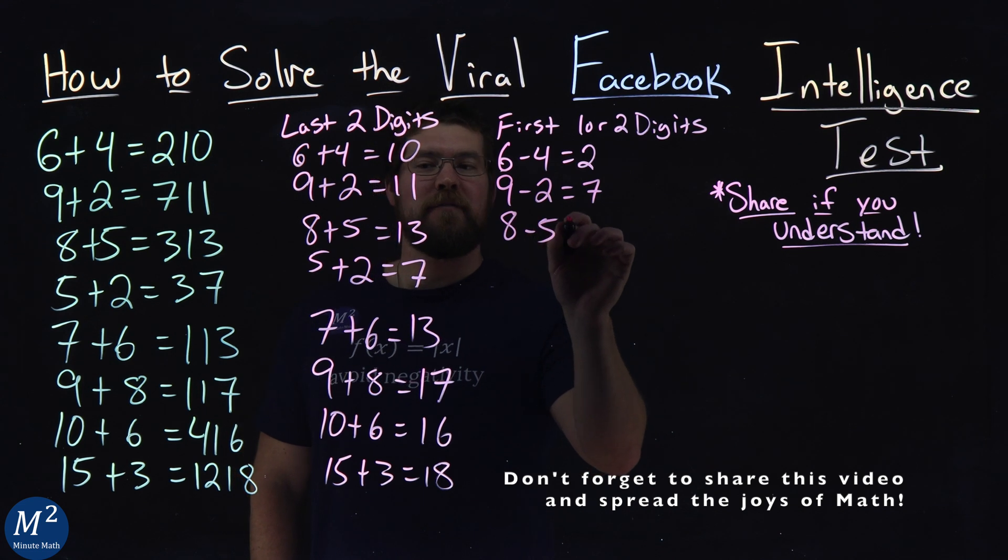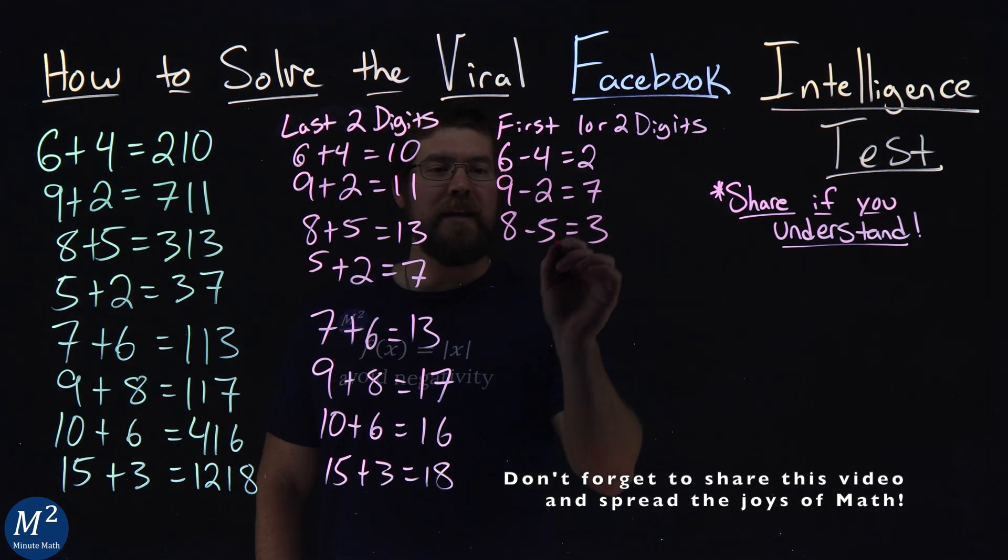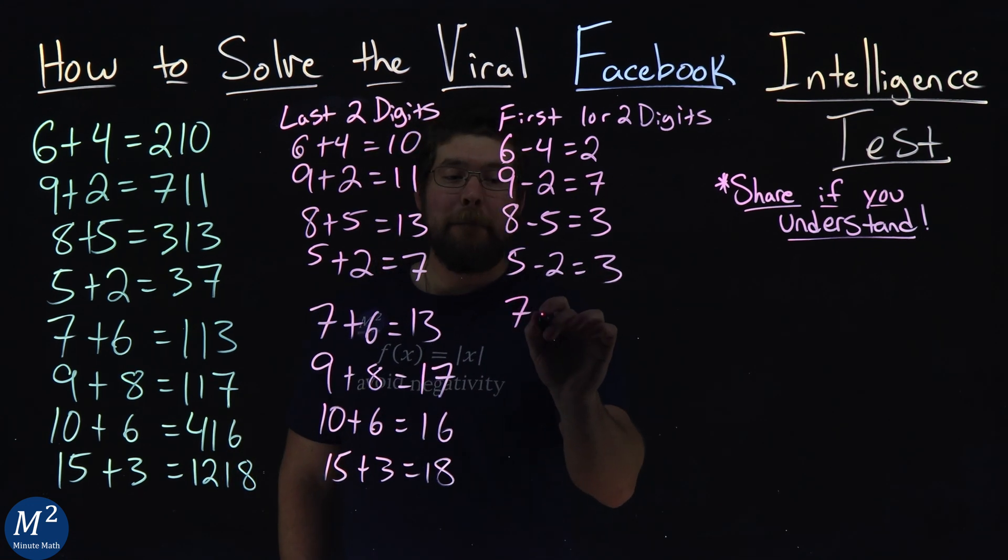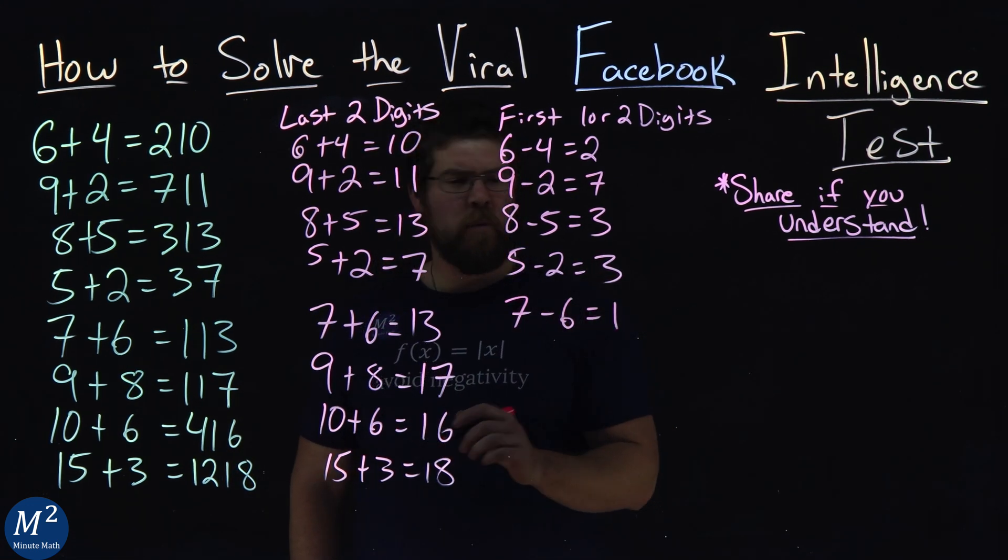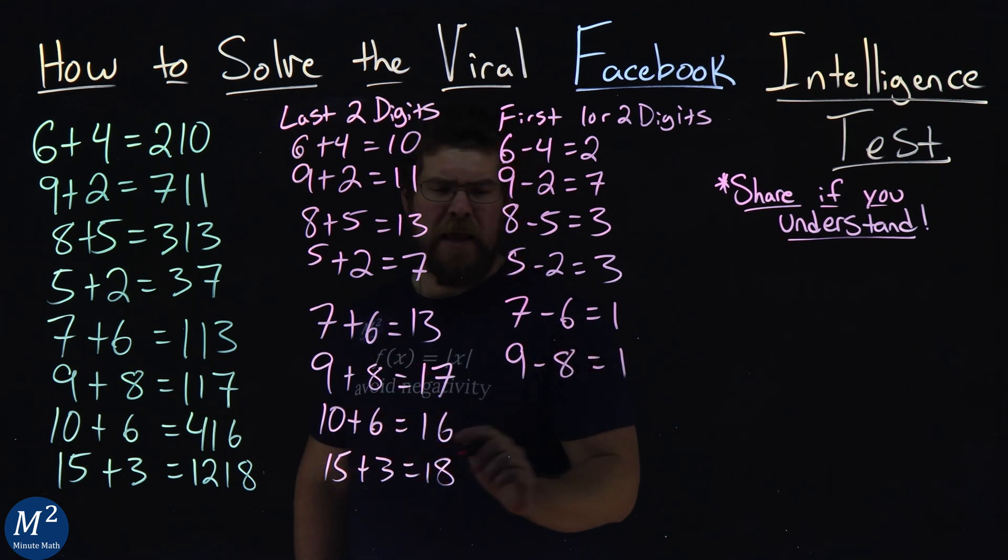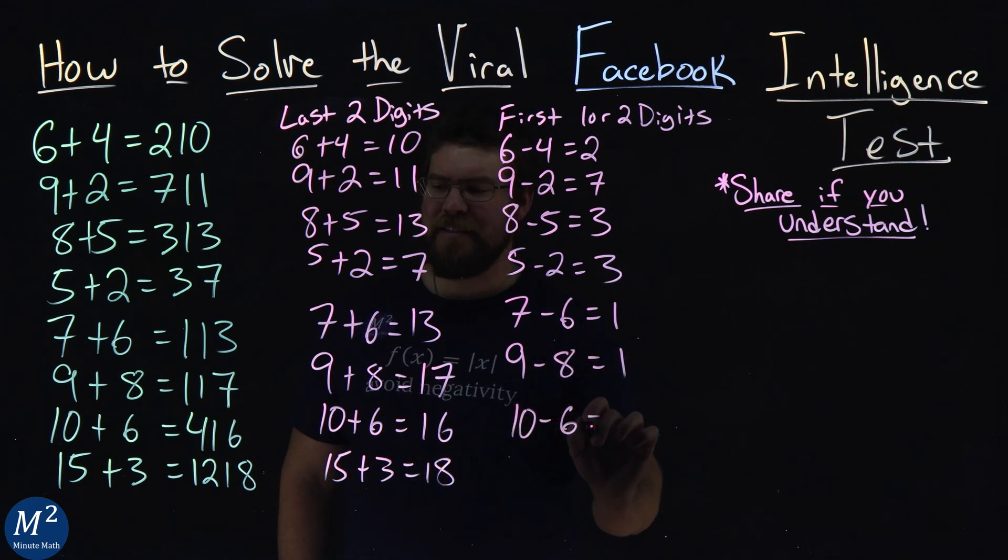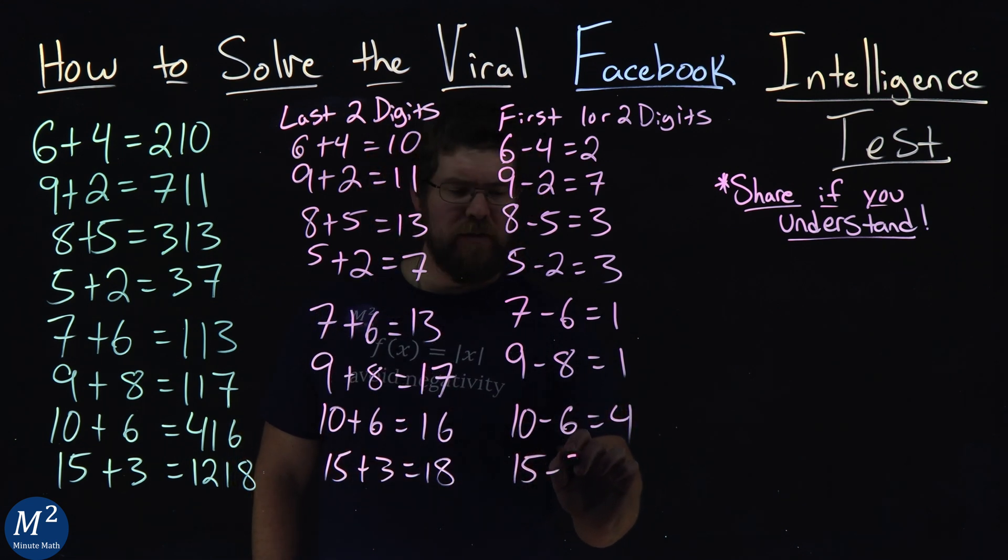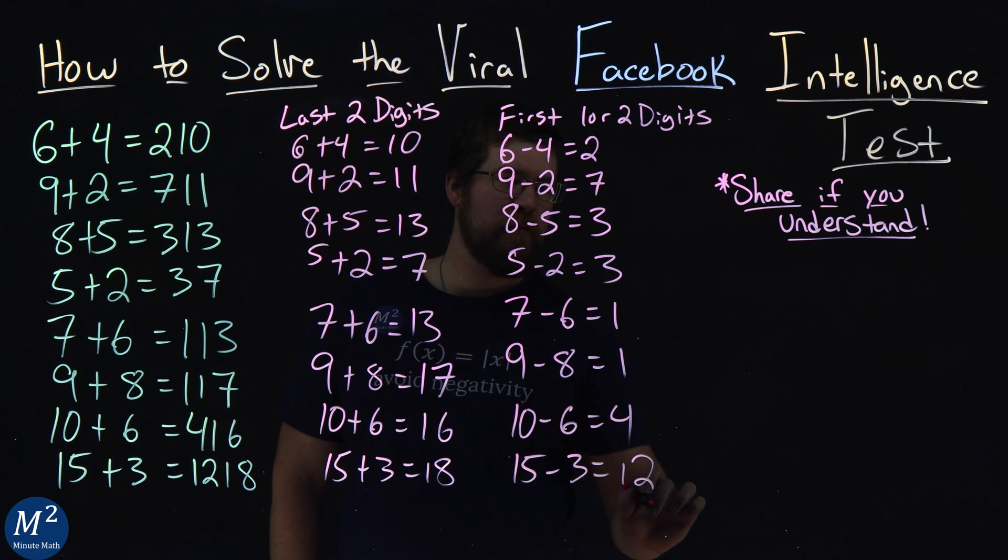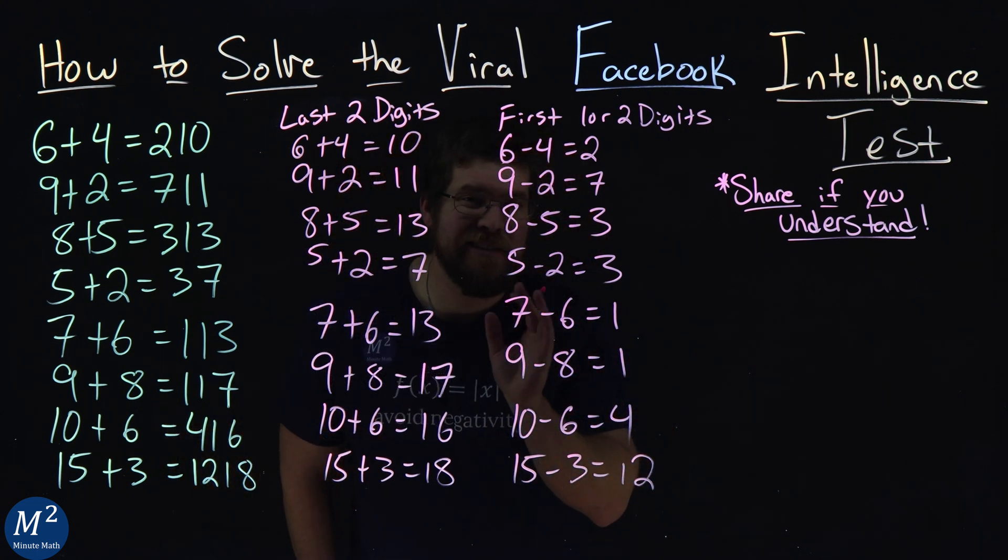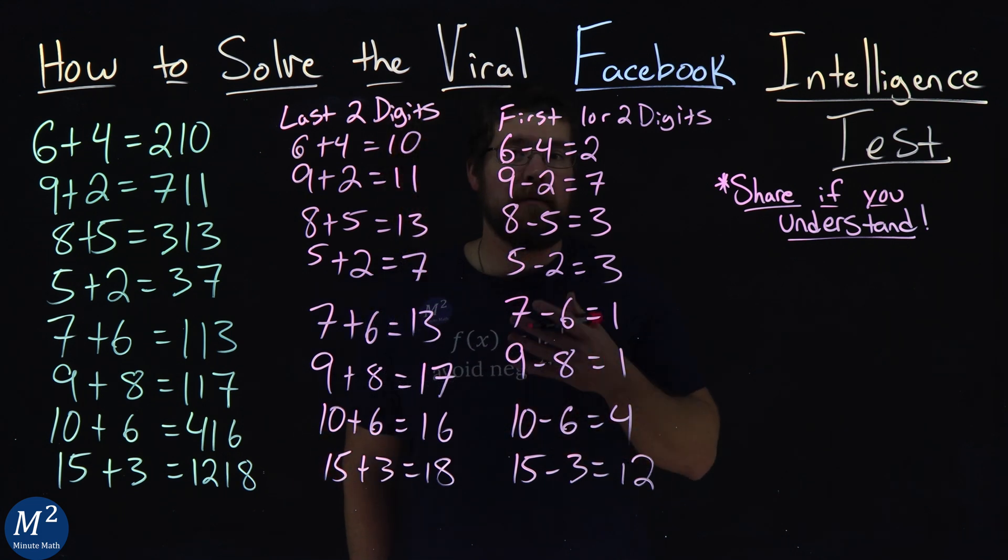An eight minus the five gives me a three. A five minus a two also gives me the three. The seven minus a six is just good old one. And nine minus an eight also is a good old one likewise.